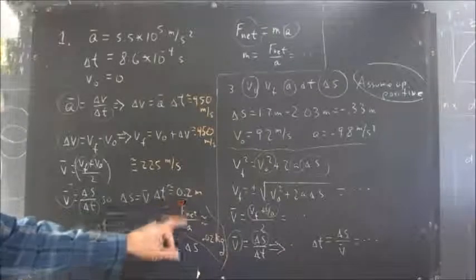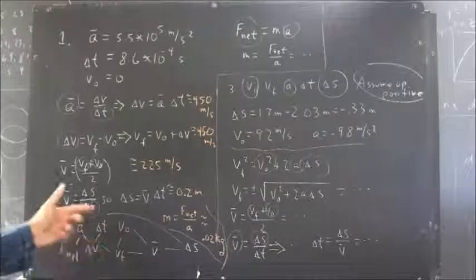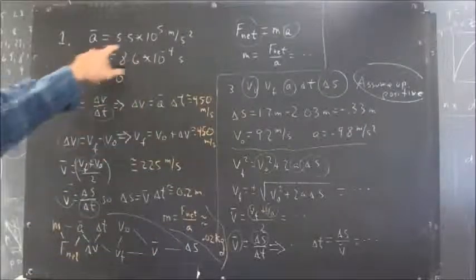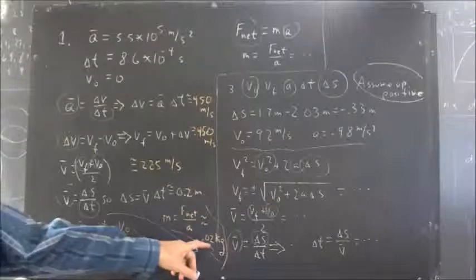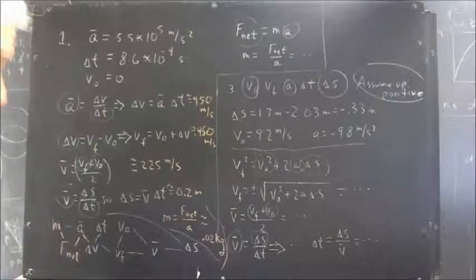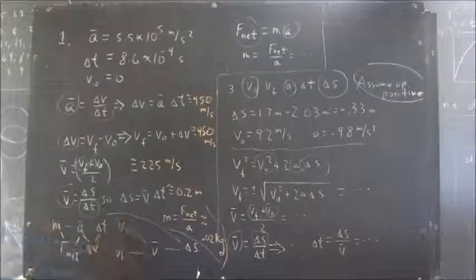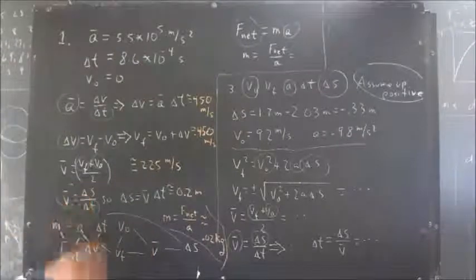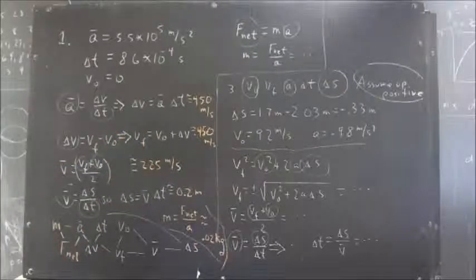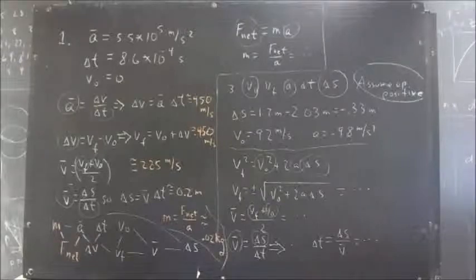And then to get the mass, we divide net force by the acceleration. And net force was 10,000 newtons. And the acceleration, 5.5 times 10 to the 5th meters per second squared. Comes out around 0.02 kilograms. A little closer to 0.018. But round that off to 0.02 to give you a ballpark. So if you do these calculations to check yourself, you'll see what we've got. You'll see if you came out close. And if you disagree with my calculations, please let me know. We'll be sure to try to reconcile it.